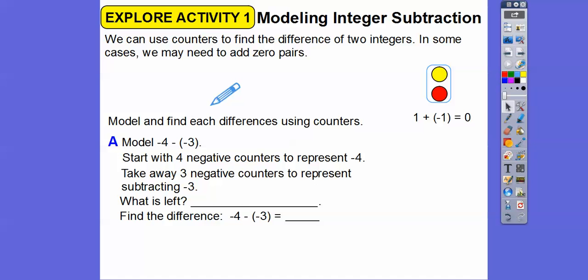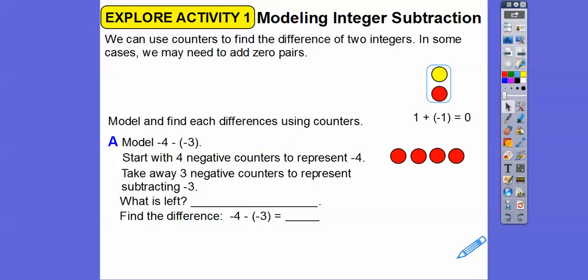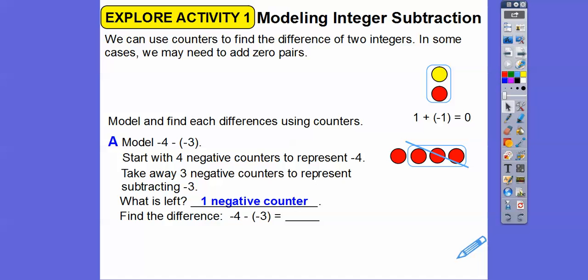Model and find each difference using counters. Model negative 4 minus negative 3. The first part says start with negative 4 counters to represent negative 4 — so there's negative 4 counters. Next, take away 3 of the negative counters. I have 4 negative counters, so we're just going to wipe out 3 of them. What's left? We have 1 negative counter left. So the difference is negative 1.